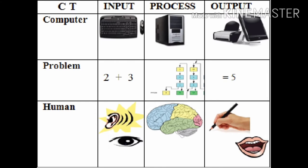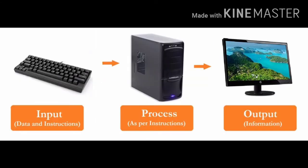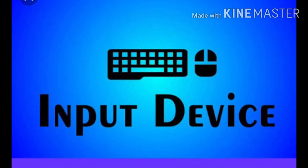Similarly, a computer also takes the input of a problem through devices like a keyboard or mouse, processes it in its brain called the CPU, and gives the desired output through a monitor or printer. This working cycle is known as the IPO cycle: Input, Process, Output cycle.